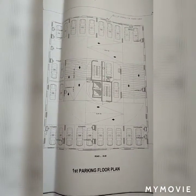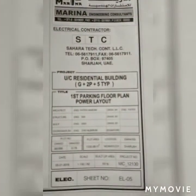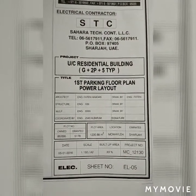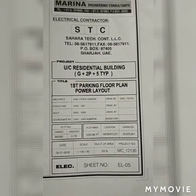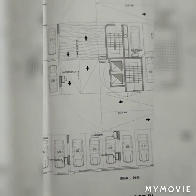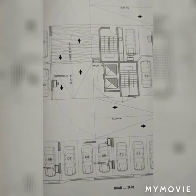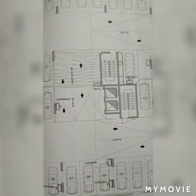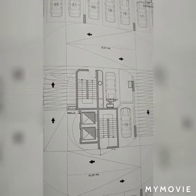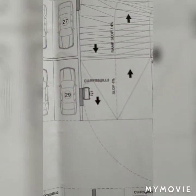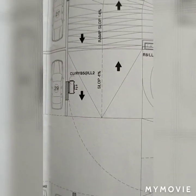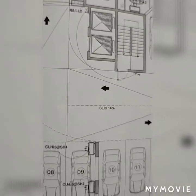First parking is the power layout, Sheet No. EL05. This shows the power of the socket, AC load, and the power of the socket. This is the AC machine — the AC machines are around 9,000 BTU.